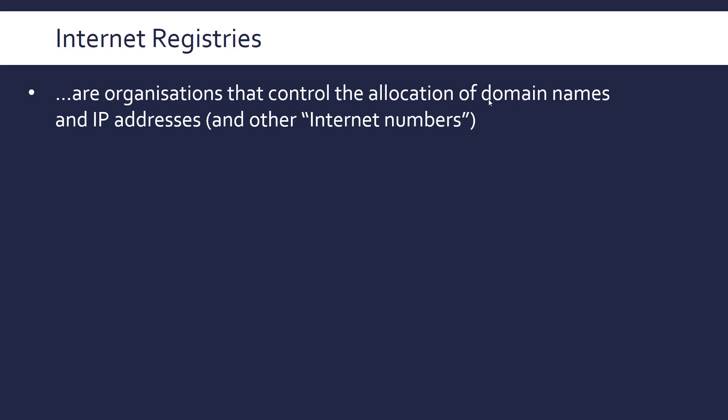We're going to talk about it in terms of IP addresses and domain names. Internet numbers refers to IP addresses and domain names, despite them maybe not technically being numbers — that's just an overarching term. It also covers minor things like time zones, something called autonomous system numbers (AS numbers), and the codes used to refer to protocols, which have unique codes — various things which are quite important and especially important to be standardised.